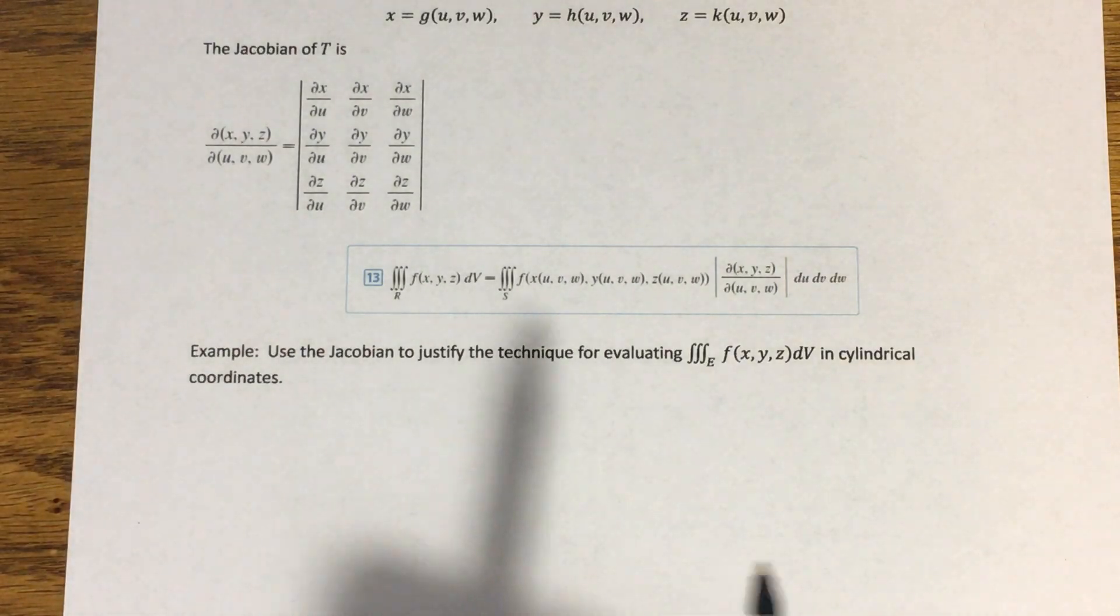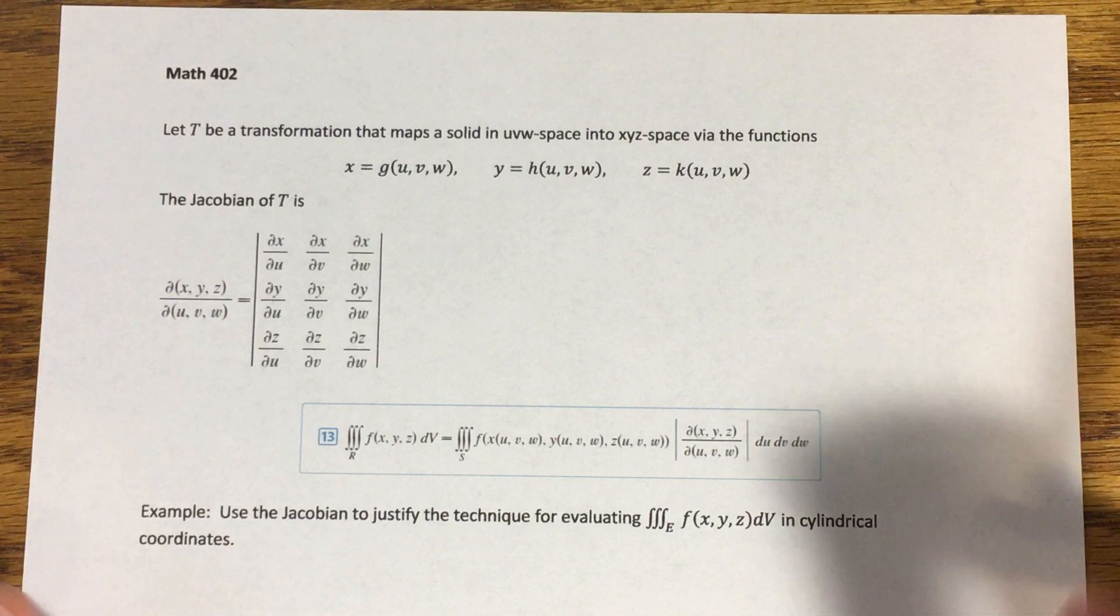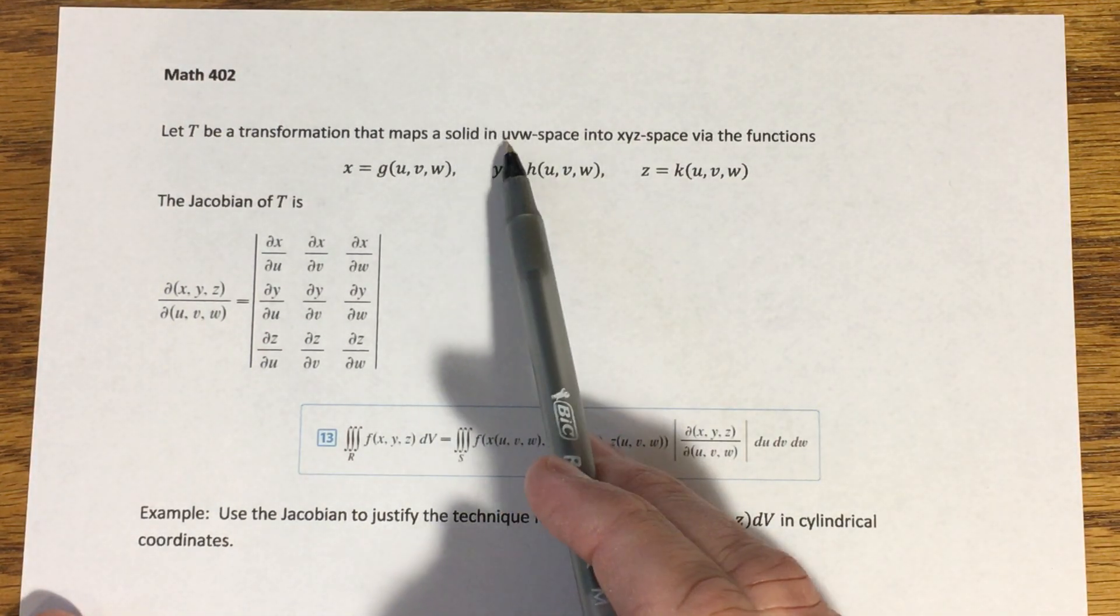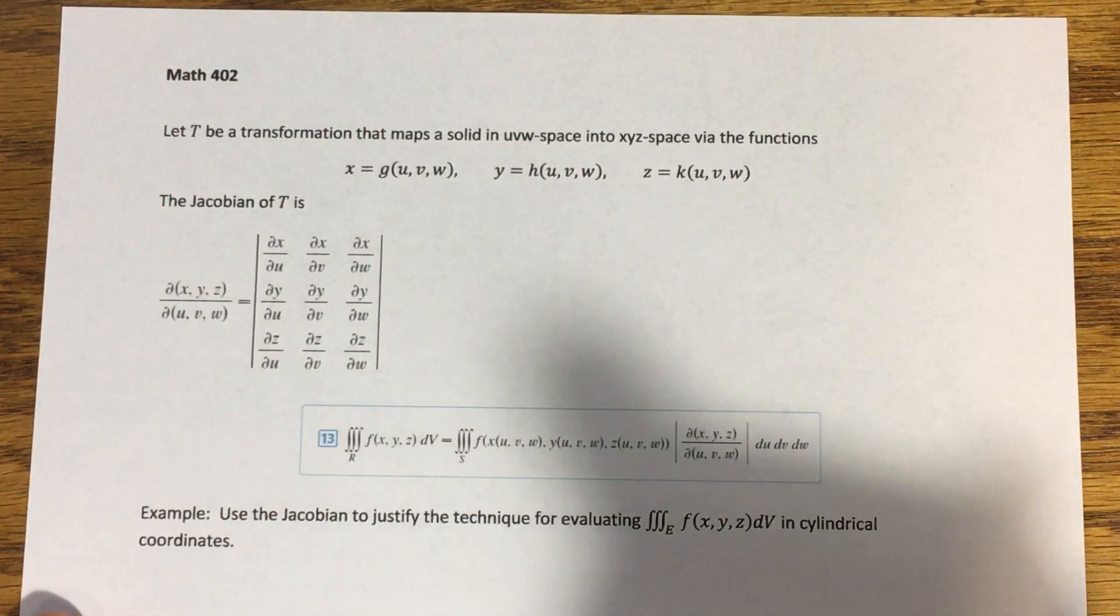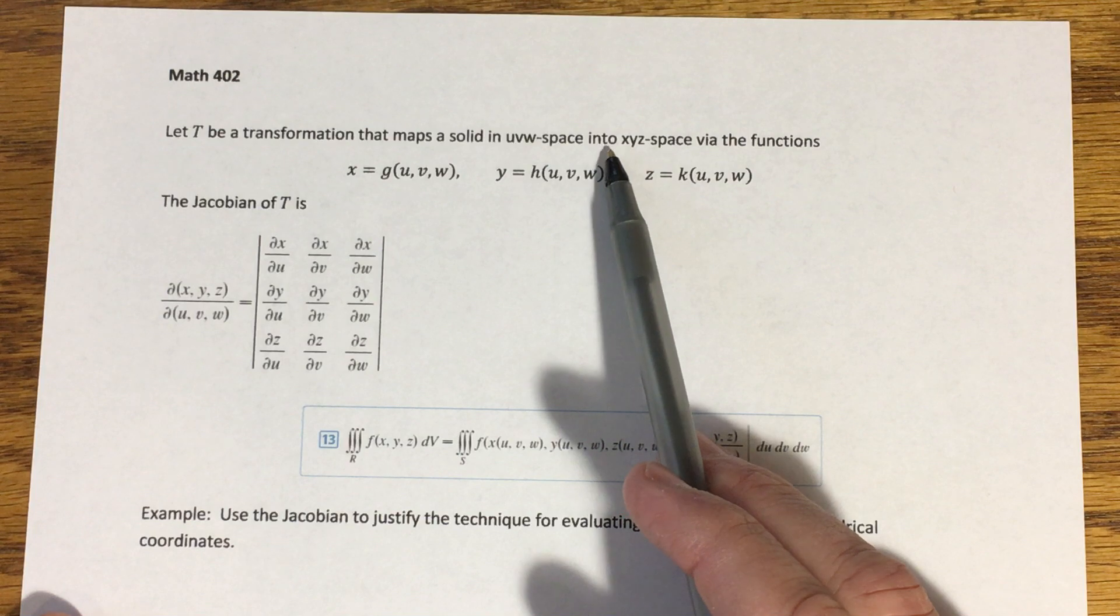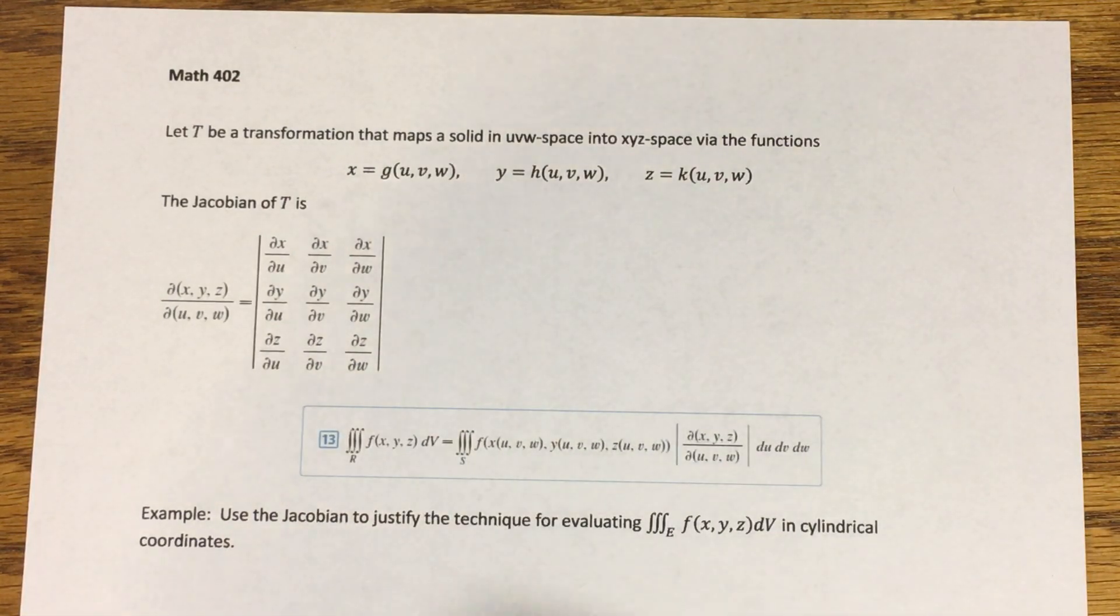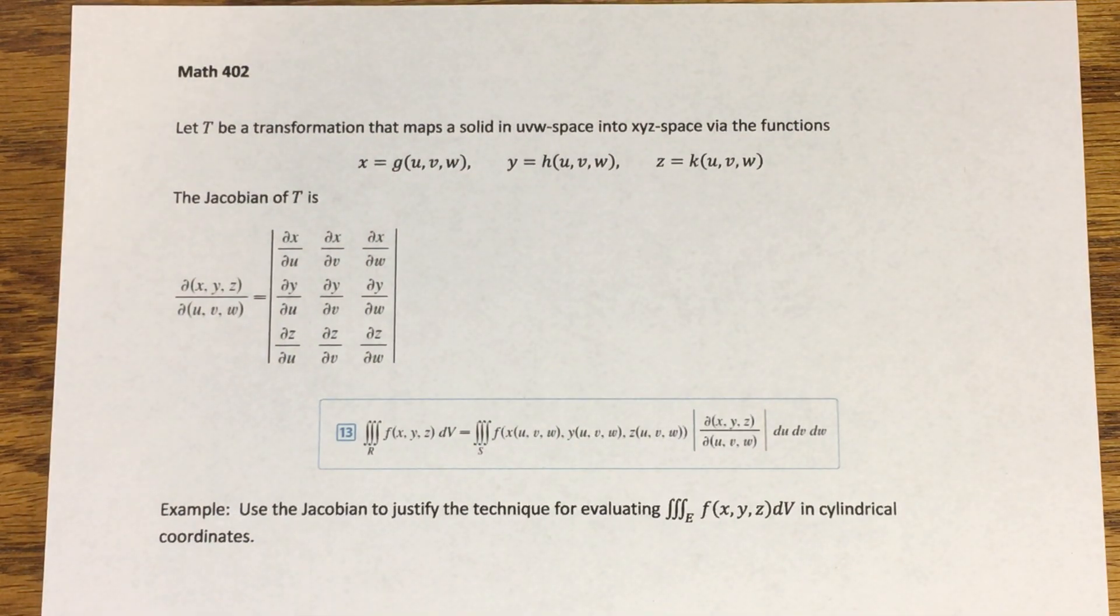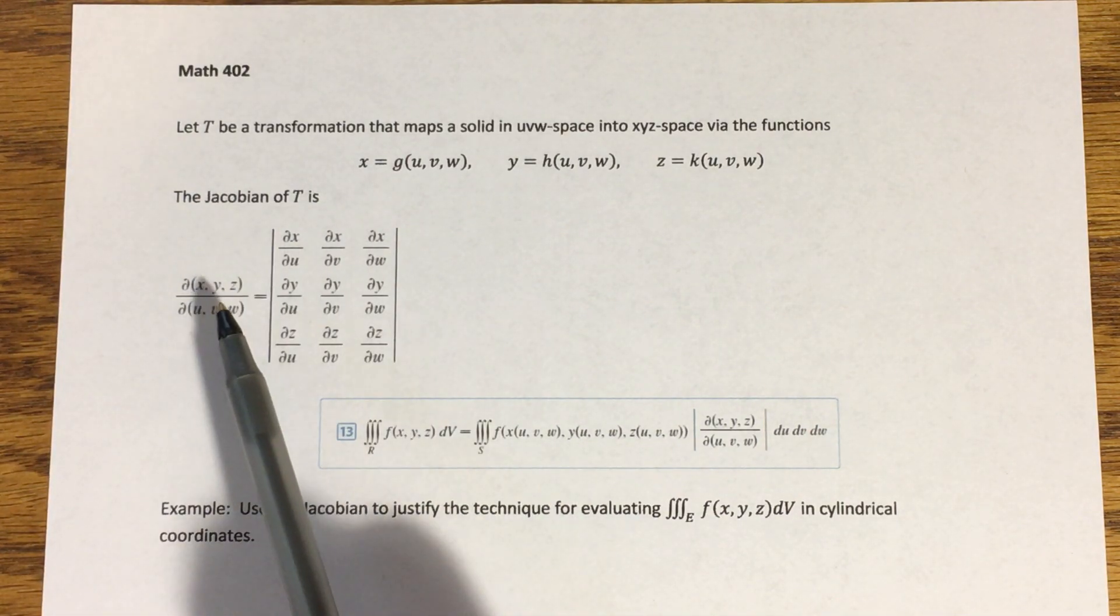Okay, one last thing to look at here. So here, t is going to be a transformation that maps a solid now in u v w space. So that would be three space where I've labeled the axes u v and w into x y z space via these functions here. So what we're kind of working towards is a way to take the idea behind the Jacobian and generalize it to functions of three variables instead of just functions of two variables. We don't need to go through an entire derivation again, because it would be very similar to what we've already done. But we end up with this as our Jacobian.